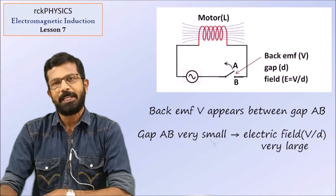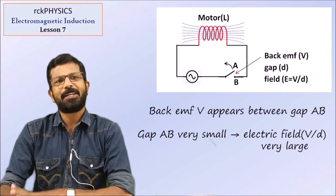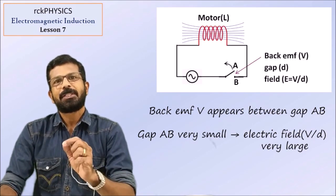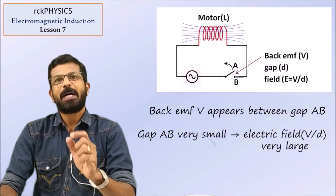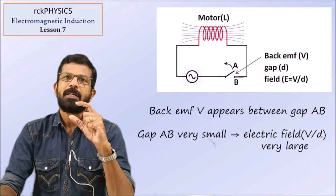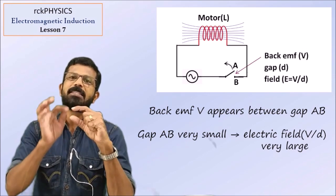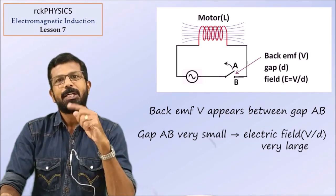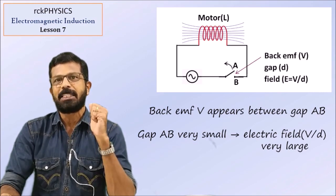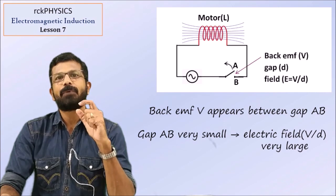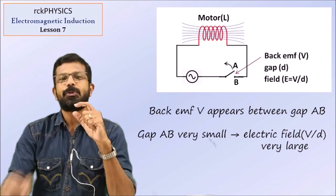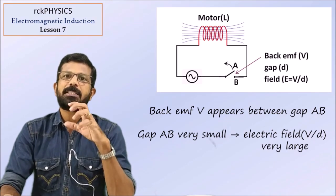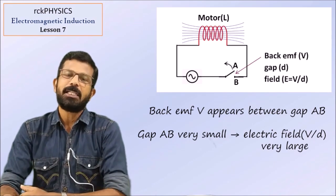To summarize: when you open the switch, the back EMF appears across the terminals of the switch. As the gap between the terminals is very small, this produces a large electric field — because electric field is potential difference divided by distance. This electric field is large enough to produce electrical discharge through the air in the gap, and it is this discharge that appears as the spark in the switch.